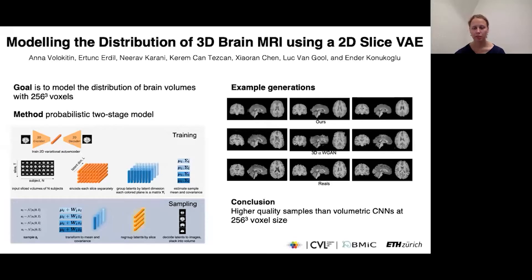We have developed a method to model the distribution of 3D brain MRI volumes with 256 cubed voxels. This large input size means that we can make use of the full resolution of typical MR volumes, as we do not need to downsample images to fit our architecture.